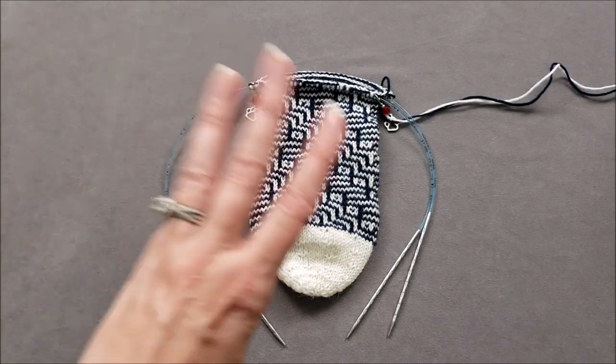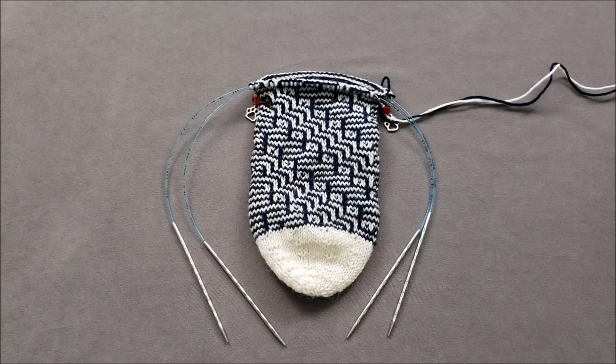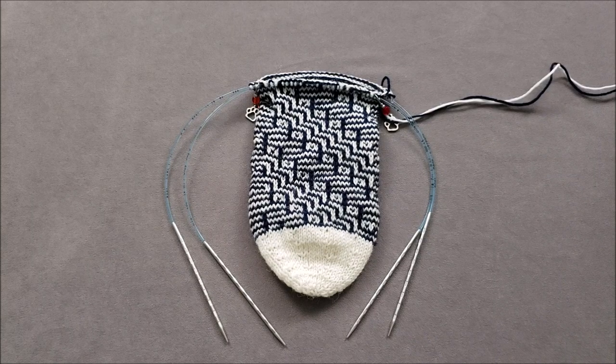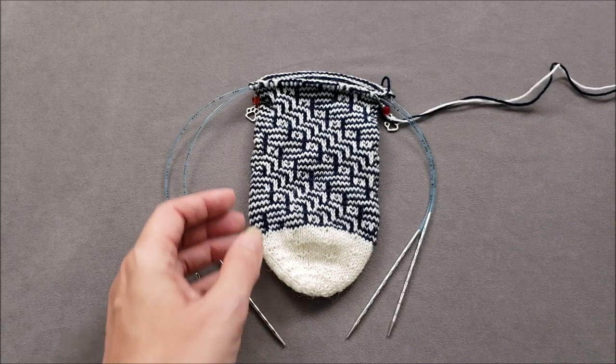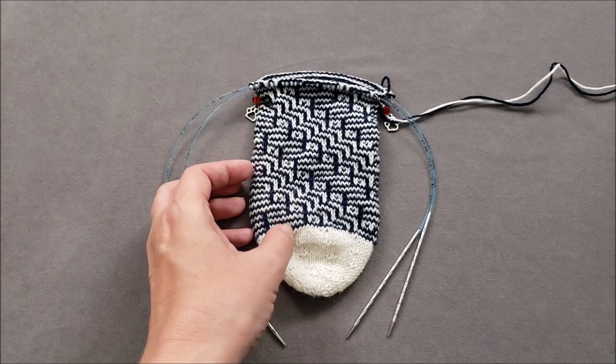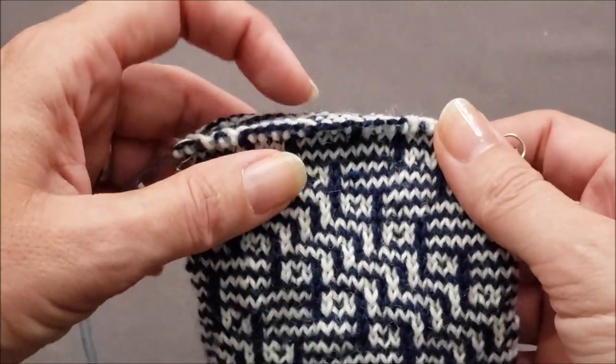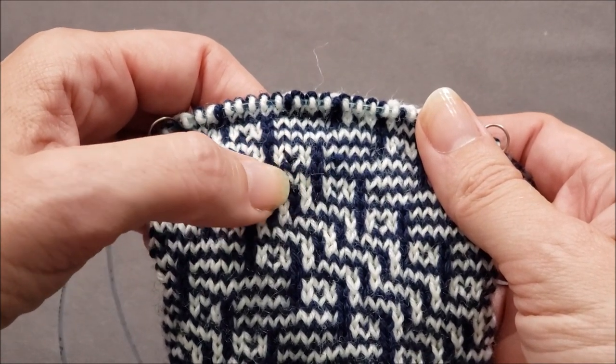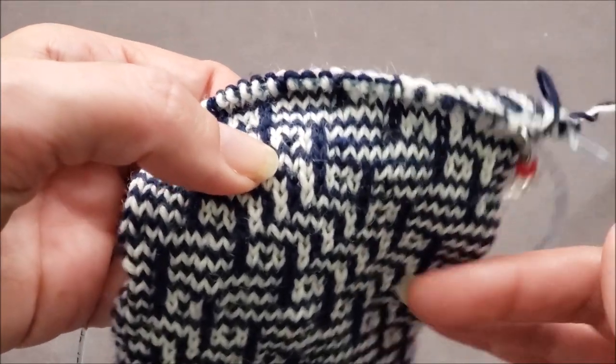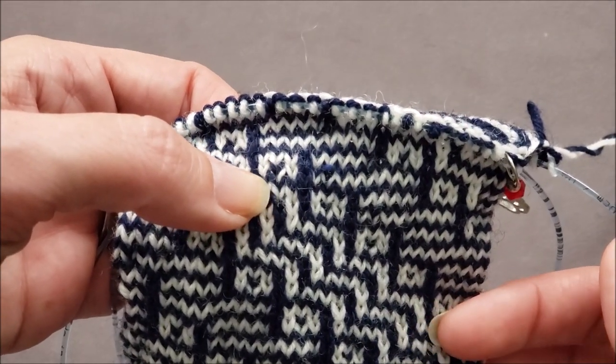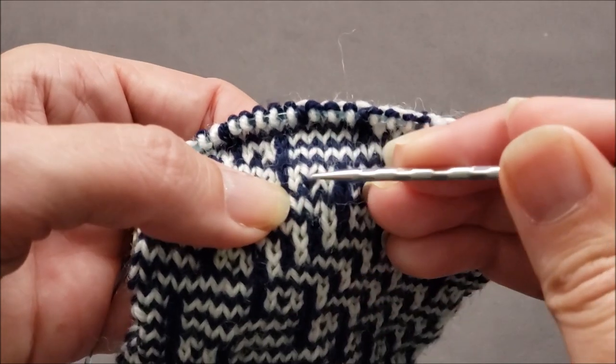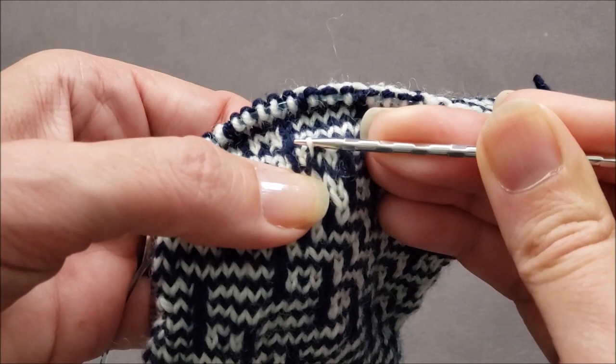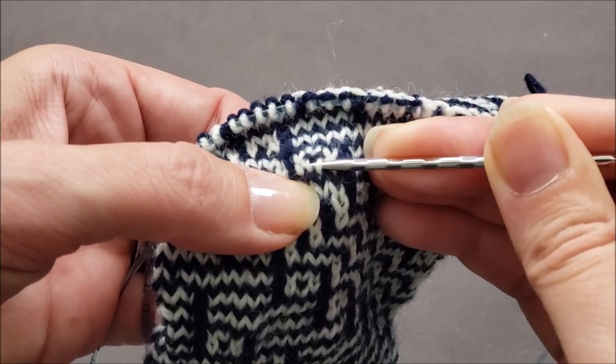Tip number three: Blocking will generally correct any tension irregularities caused by slipping stitches. But if not, you can use a knitting needle to make minor fixes. Let's zoom in and I'll show you what I mean. Right here there should be a little white square but you can see it looks like the blue stitch is covering it up. So all you need to do is take your knitting needle, dig in there just a little bit, and even things out.